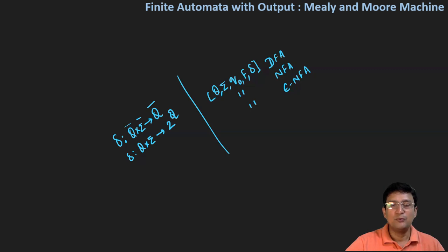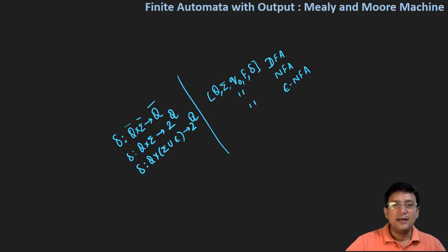In the NFA, it is allowed to move to more than one state, and it is also allowed that there is no transition from one of the states with the given symbol. The epsilon NFA is defined as Q cross sigma union epsilon, and this maps to one of the states in two raised to the power Q. Apart from all the input symbols given in sigma, epsilon is also treated as an input symbol, and we can map to any of the states in two raised to the power Q.